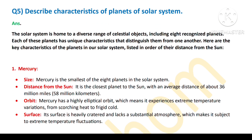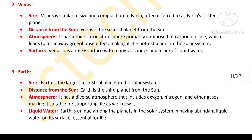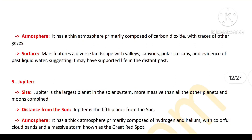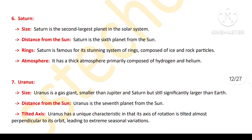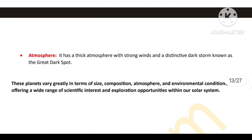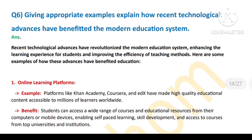Question number five: Describe the characteristics of the planets of the solar system. Here is the answer.